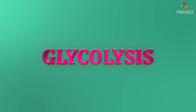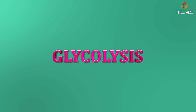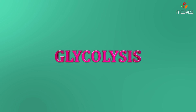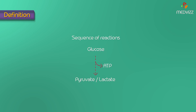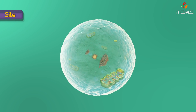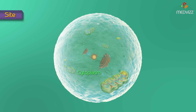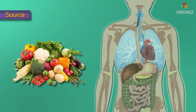In this module, we are going to deal with Glycolysis as well as its clinical importance. Glycolysis is defined as the sequence of reactions where glucose is converted into pyruvate or lactate with the production of ATP. Pyruvate is produced in aerobic conditions whereas lactate is produced in anaerobic conditions. The site of glycolysis is in the cytoplasm of almost all the cells of the body, and the source of glucose is mainly from the diet.